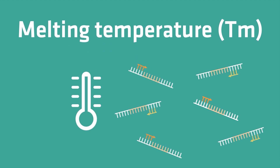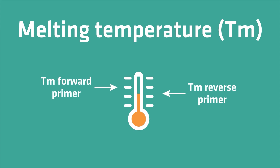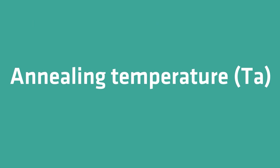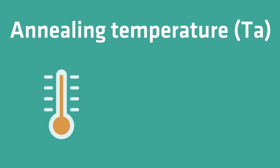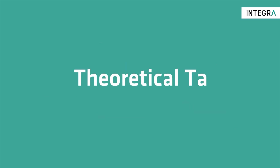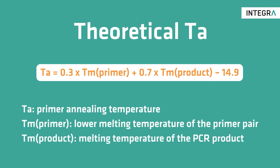The primer melting temperature is the temperature at which half of the primers dissociate from the template DNA. It's typically between 50 and 60 degrees Celsius. The melting temperatures of the forward and the reverse primers should be within 5 degrees of each other. This ensures that you will find an annealing temperature that allows both primers to bind to the template DNA. The theoretical annealing temperature can be calculated using the lower melting temperature of the primer pair and the melting temperature of the PCR product.